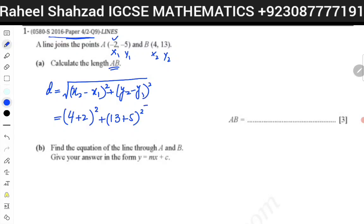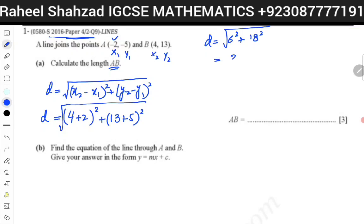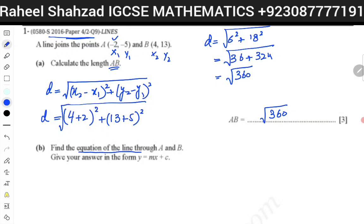Plus 13 plus 5 whole square, under the root. That is the distance. So distance is equal to 6 square plus 18 square under the root, that is equal to 36 plus 324 under root, that is equal to root 360. You can simplify it.